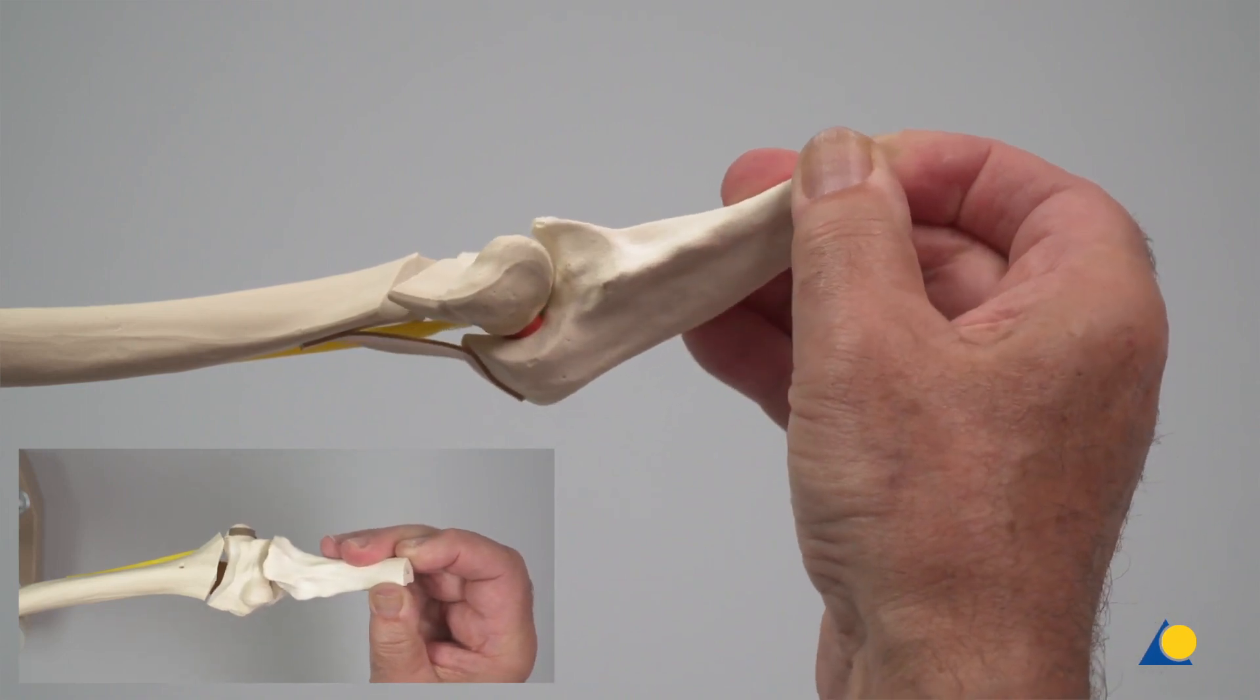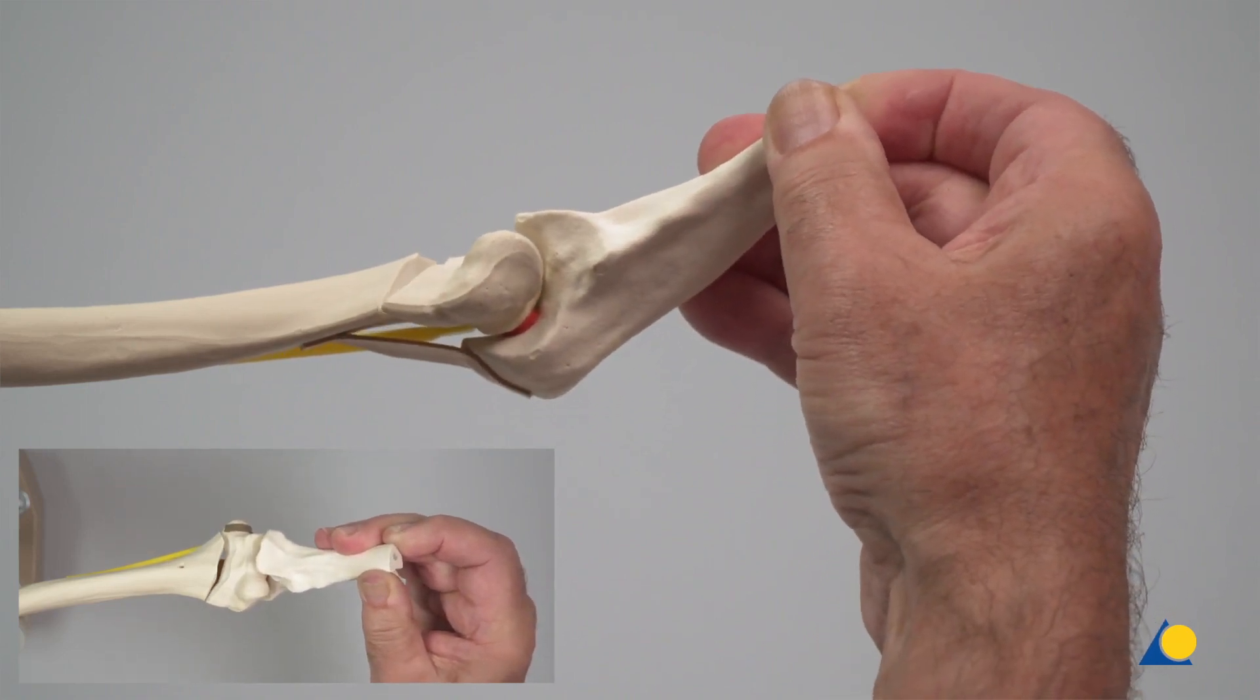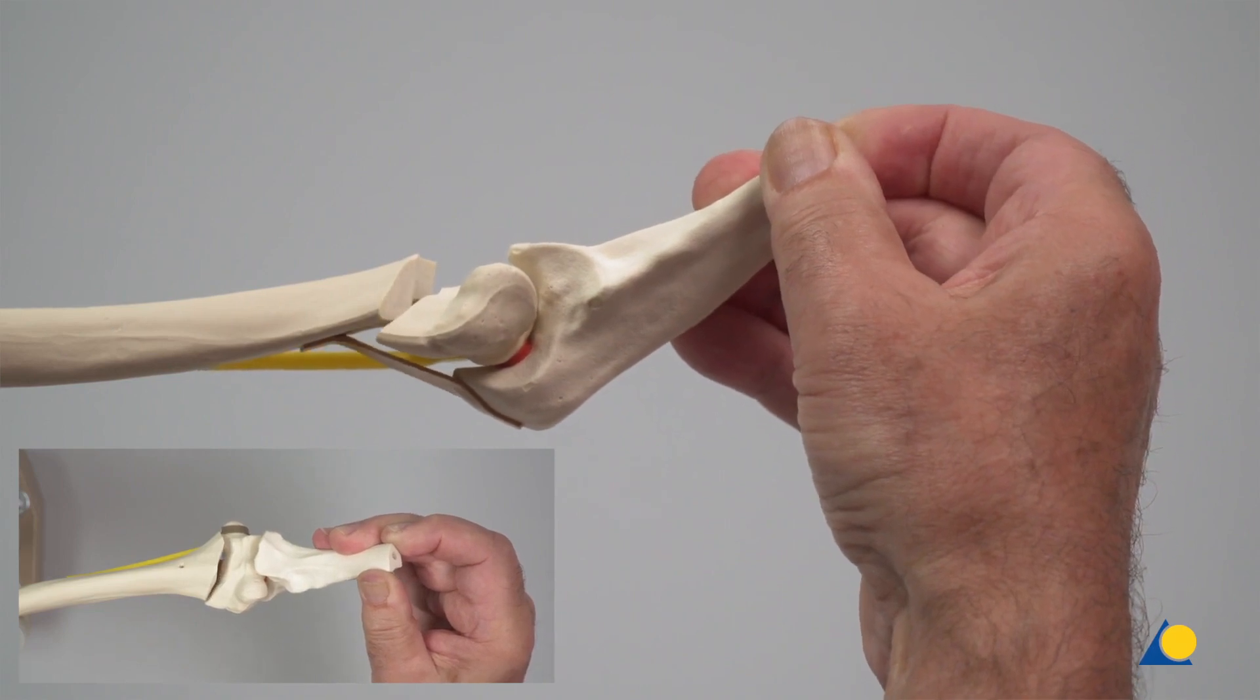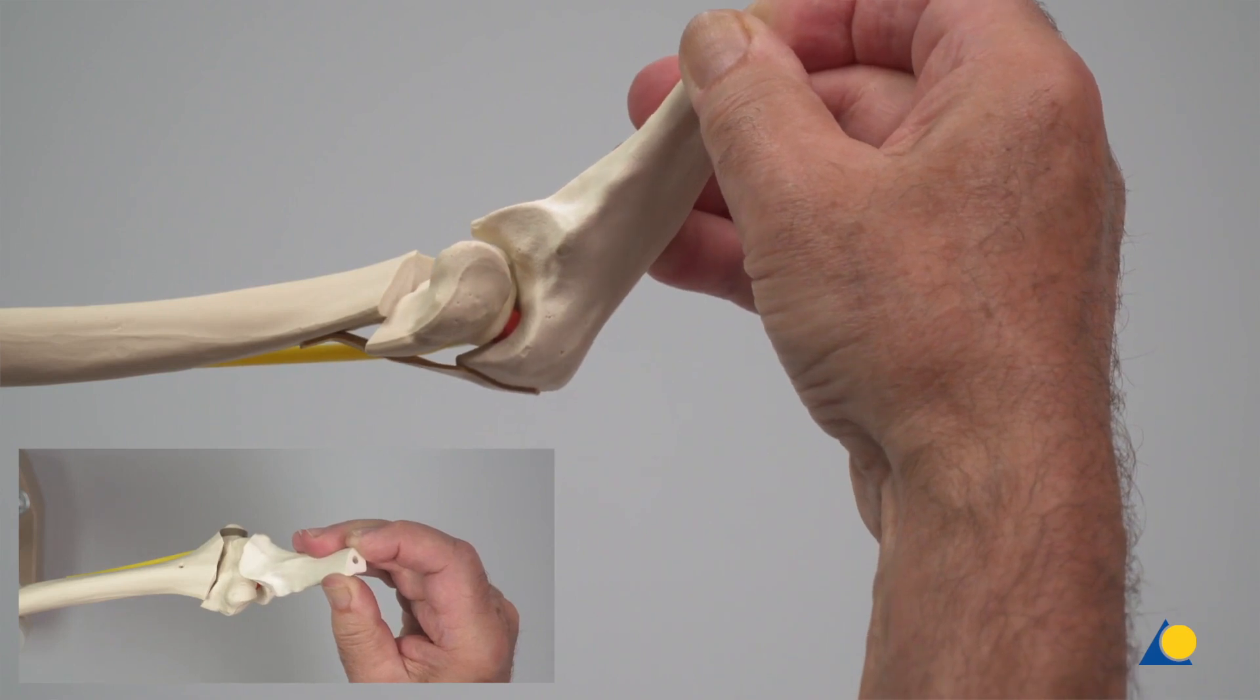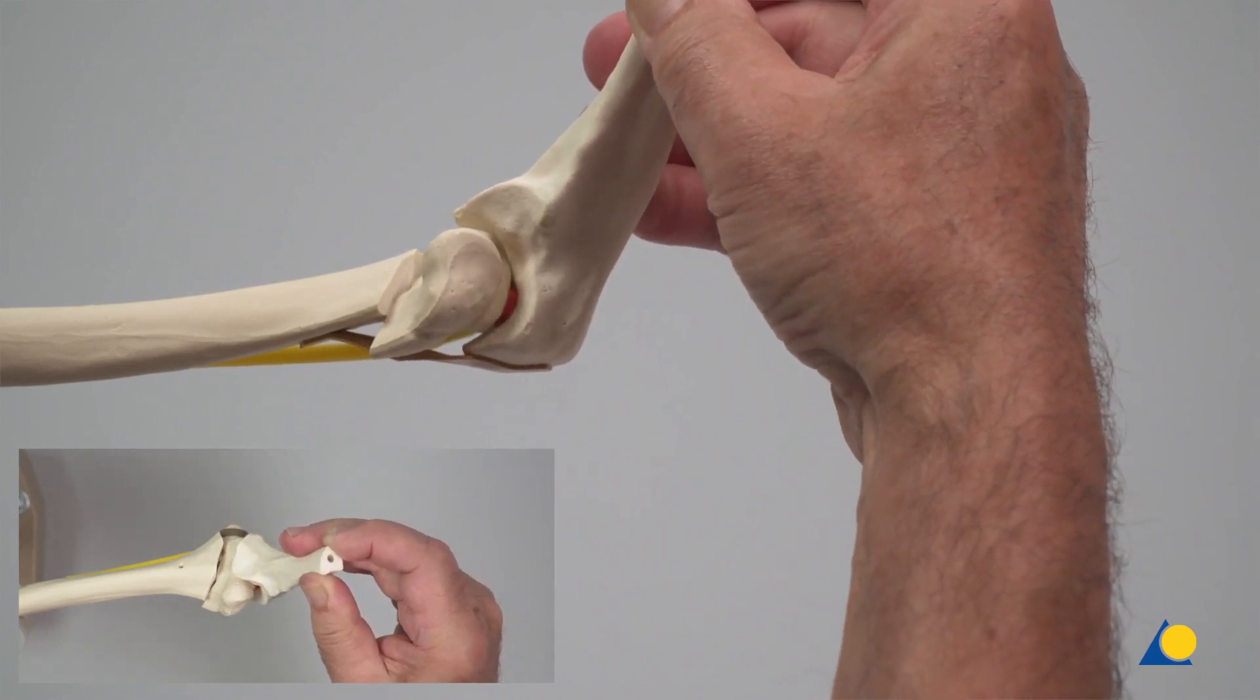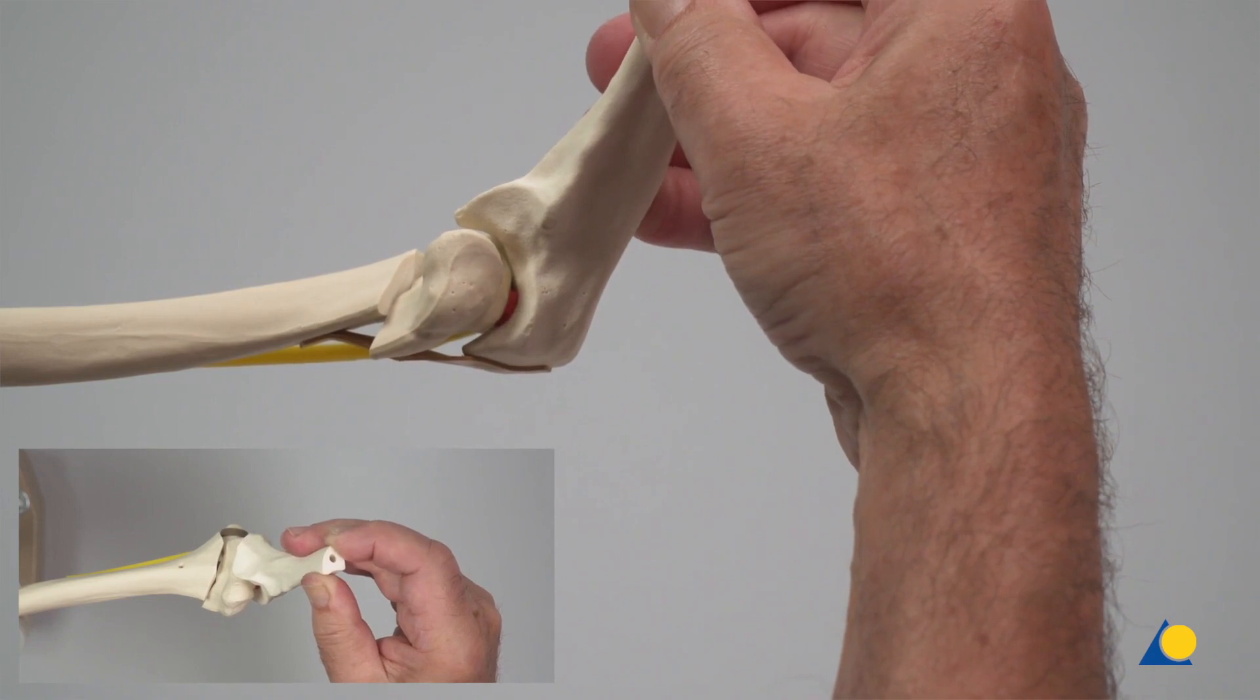Observe that, if the reduction is incorrect, the elbow cannot be flexed past 90 degrees. In this situation, the forearm must be straightened and pulled for 2 to 3 minutes more and the steps for reducing the fracture repeated.